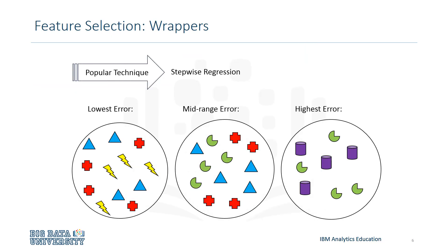Wrappers use a predictive model that scores feature subsets based on the error rate of the model. While they're computationally intensive, they usually produce the best selection of features. A popular technique is called Stepwise Regression — an algorithm that adds the best feature or deletes the worst feature at each iteration.